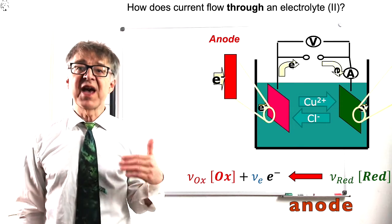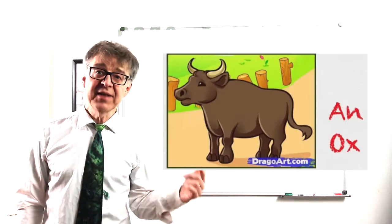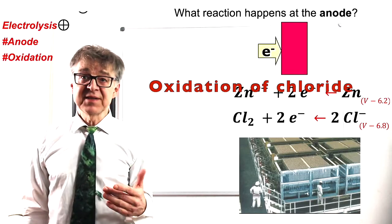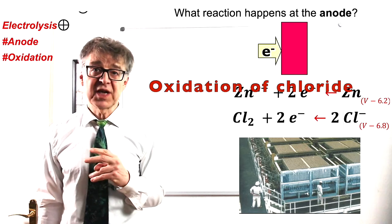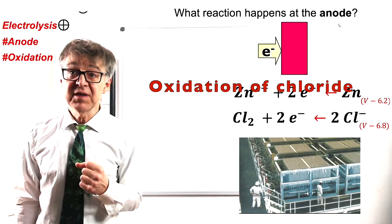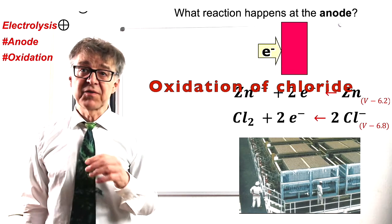Thus, at the anode, there is oxidation, easy to remember: an ox. In electrolytic cells, the anodic reaction is forced, for example, the oxidation of chloride to chlorine. The anode is therefore the positive terminal of an electrolytic cell.